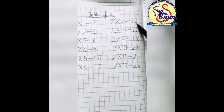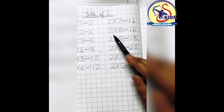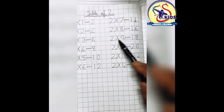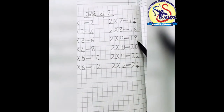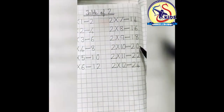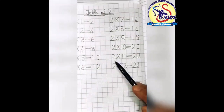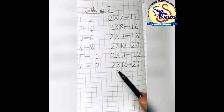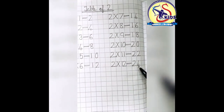2 into 7 equals 14. 2 into 8 equals 16. 2 into 9 equals 18. 2 into 10 equals 20. 2 into 11 equals 22. 2 into 12 equals 24.